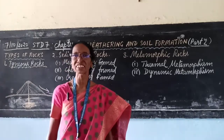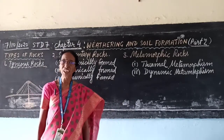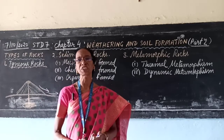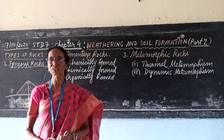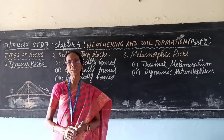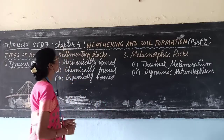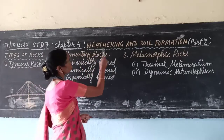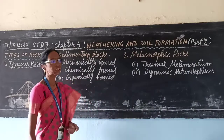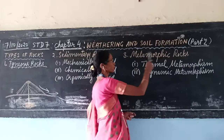Hello students of standard 7. In geography, you are learning about the different types of rocks. Through the previous video, you have studied about the igneous rocks and the two types of igneous rocks — extrusive igneous rocks and intrusive igneous rocks. Today, you are going to learn chapter 4, weathering and soil formation part 2, in which I am going to explain about the formation of sedimentary rocks and metamorphic rocks.